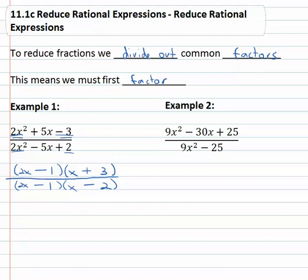So we have now gone through and factored this polynomial, both numerator and denominator. When we do that we can now see that there is a common factor, the 2x minus 1 which can divide out. And when we divide out the common factor all that's left is the x plus 3 over the x minus 2. We have reduced this rational expression.